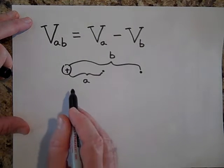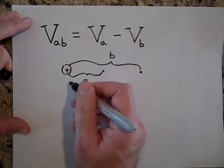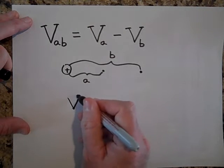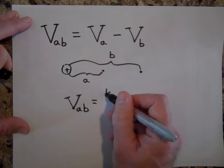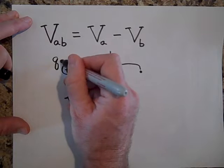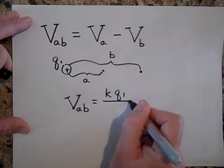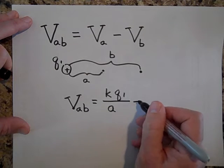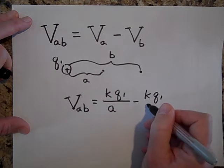And then this distance is B. Okay, to find the voltage at a distance A with respect to distance B, that would just be the voltage at A minus the voltage at B. So the voltage at A with respect to B is going to be K, let's call this Q1. So it's going to be KQ1 all over A minus KQ1 all over B.